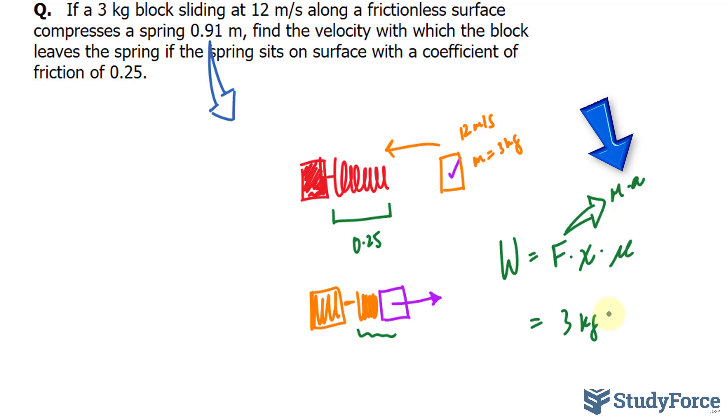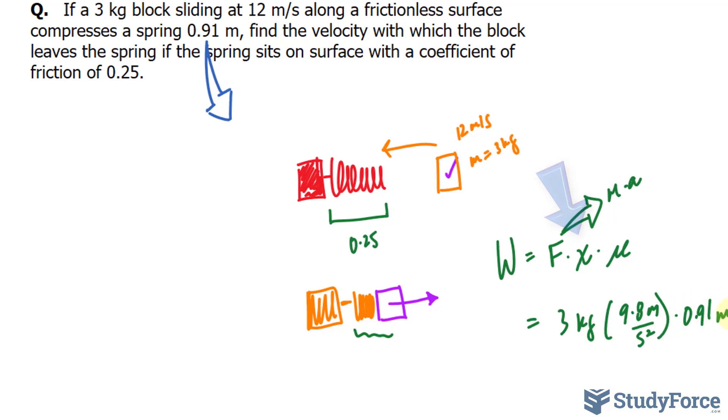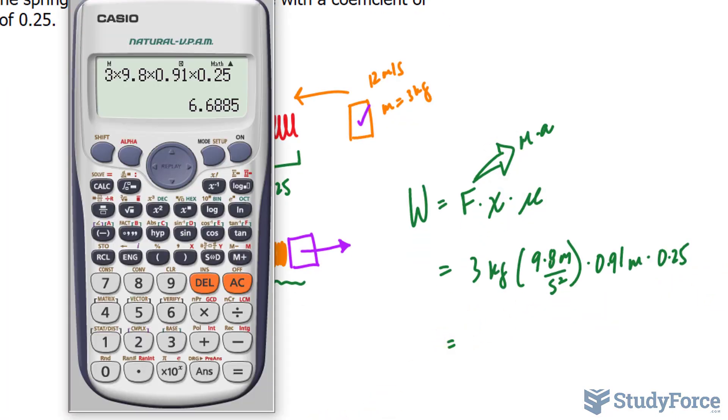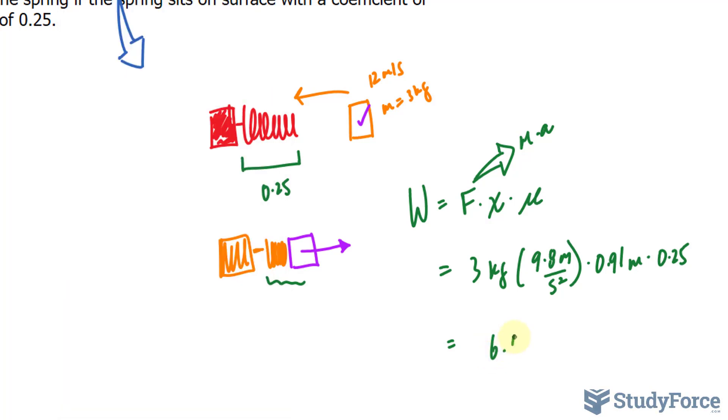Our force is found by taking the mass times the acceleration. The mass is 3 kilograms, and the acceleration is due to gravity, that's 9.8 meters per second squared, times 0.91 meters, times 0.25. Putting this all into our calculator, we should get 6.6885 joules. We won't round this just yet.